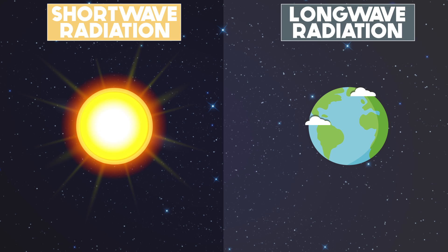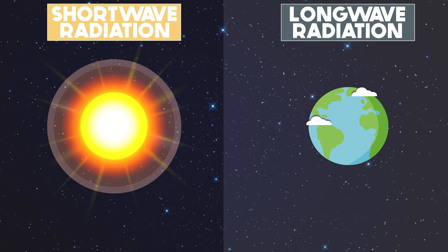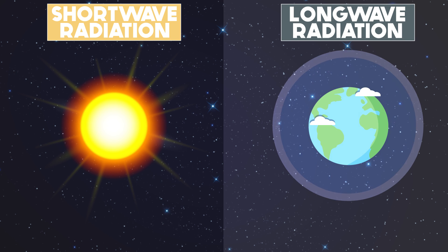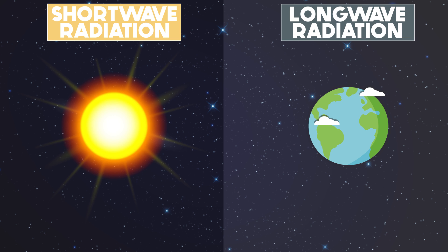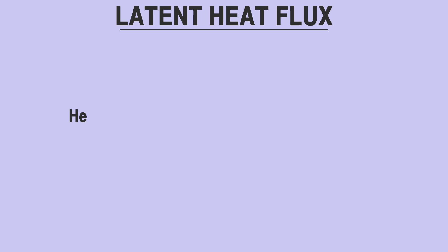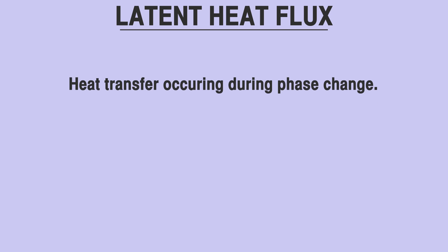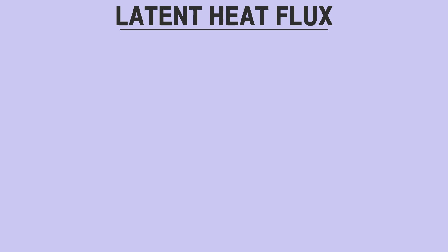Radiation from our sun reaches the Earth's surface, providing the planet with the heat and energy necessary to sustain life. The fourth and final pathway is latent heat flux, a transfer of heat that occurs when an object changes phase between solid, liquid, or gas.